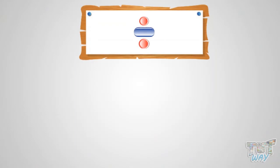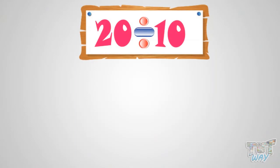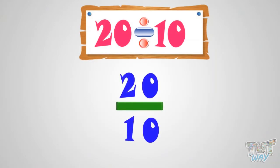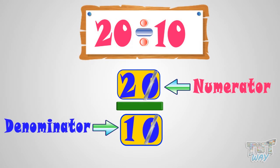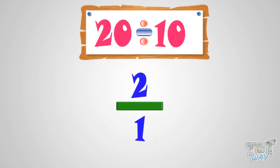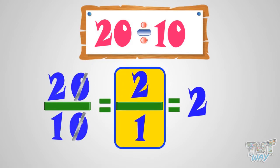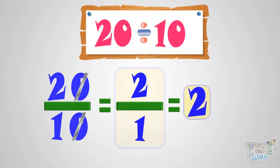We have to divide 20 by 10. We can write it like this. In order to divide with 10, we have to cut the rightmost zero from the numerator and denominator. And you are left with 2 by 1, and any number divided by 1 is that same number. So, 20 by 10 equals 2 by 1 equals 2.